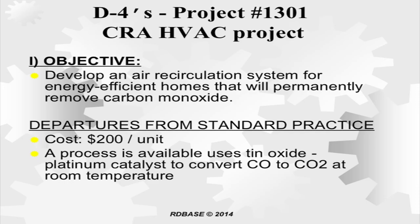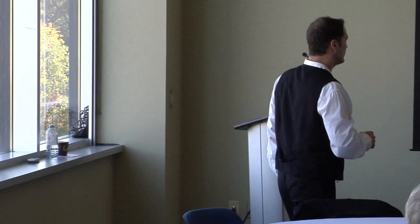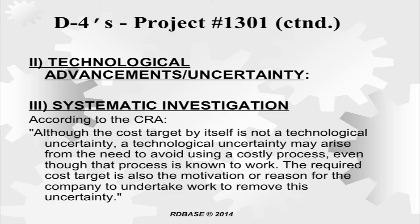The CRA's published HVAC example describes a project targeting a cost reduction to $200 per unit and an energy-efficient recirculation system to permanently remove carbon monoxide. The standard method uses tin oxide with a platinum catalyst, which they want to avoid. The uncertainty is created by combining objectives: making the system for $25,000 instead of $50,000 forces different approaches. No single objective creates the problem — it's all the objectives together, which is why outlining all objectives is necessary to understand the system uncertainty.